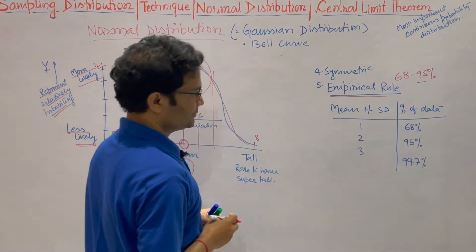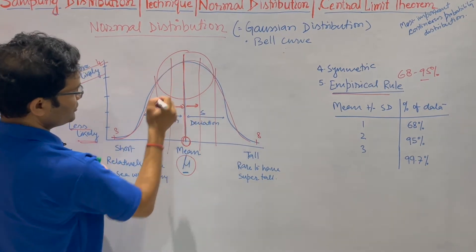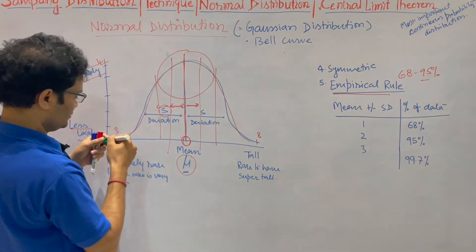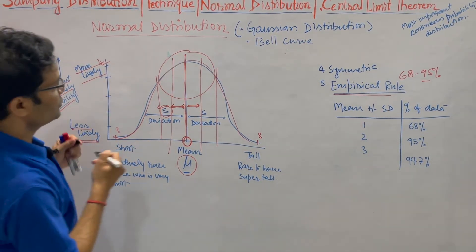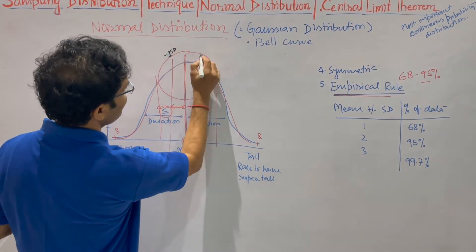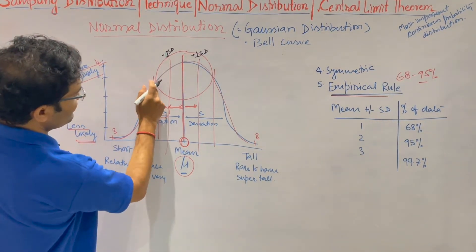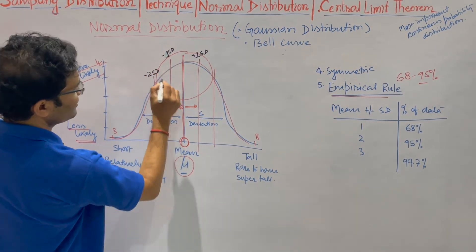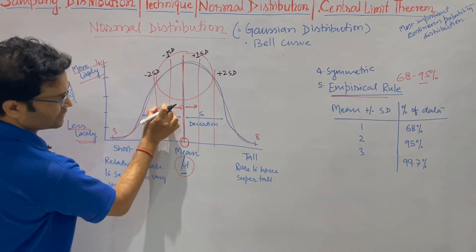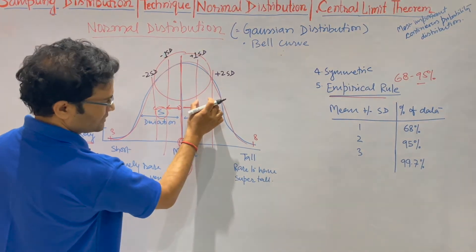The empirical rule says: this is your mean, and this is your deviation. The first standard deviation goes to the right and the minus first standard deviation goes to the left. The second standard deviation is further out on each side — plus 2 and minus 2. So to the left side we take negative deviations, and to the right side we take positive deviations: 1 deviation, 2 deviation.